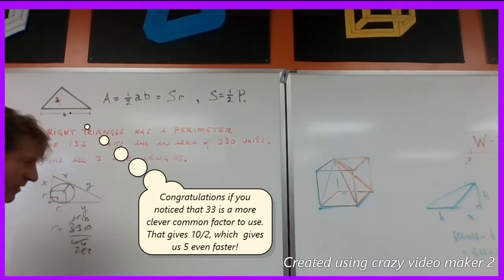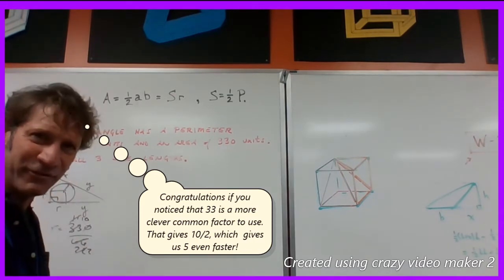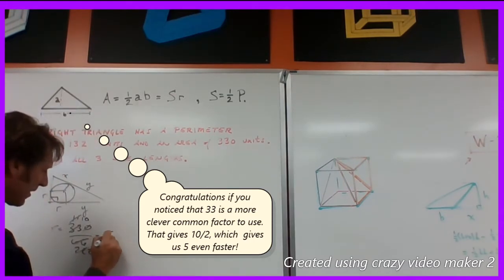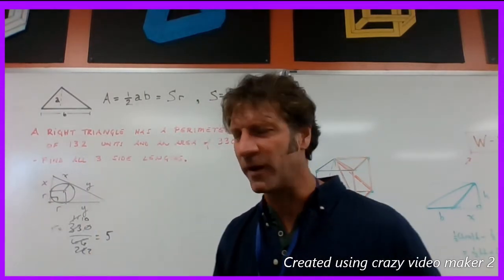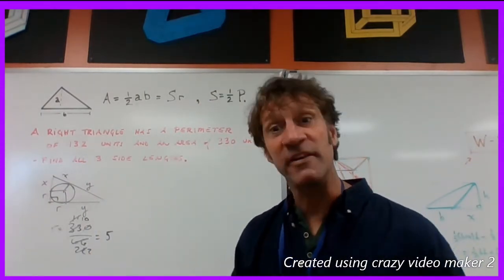There's 10 of those. Now we have 10 over 2. Oh that's just 5. Okay, so maybe you could have done 330 divided by 66 a little bit quicker. So our inradius is 5.